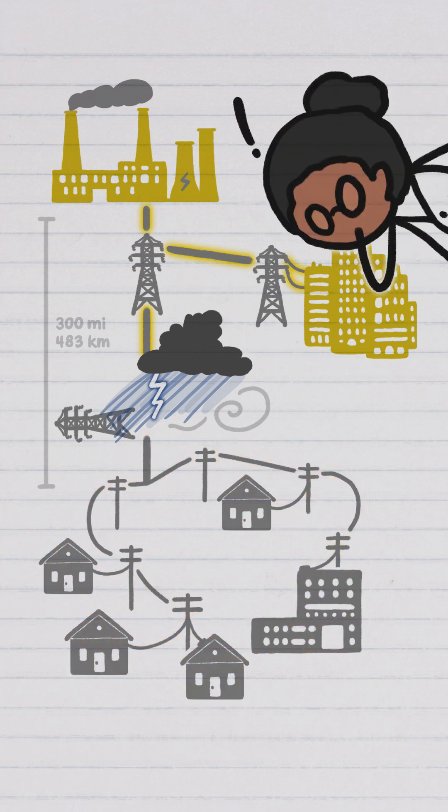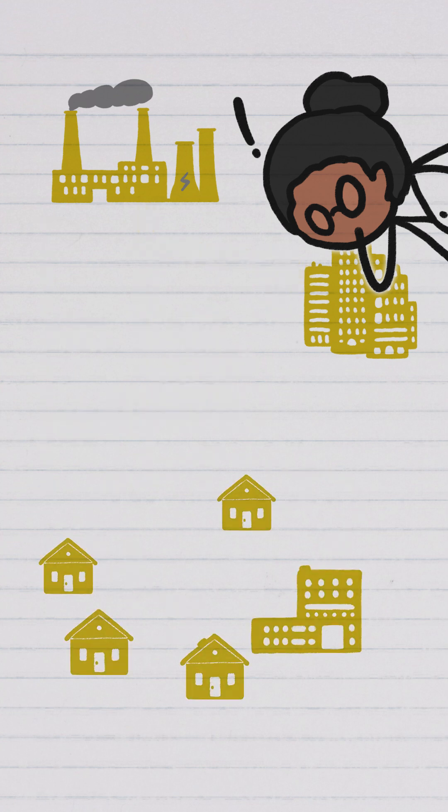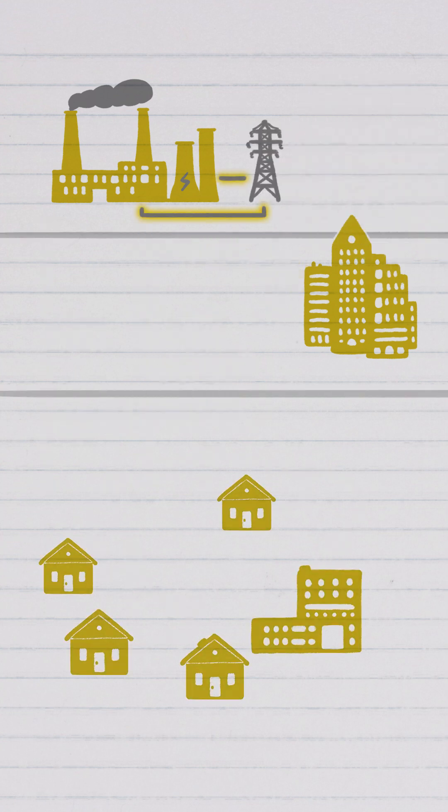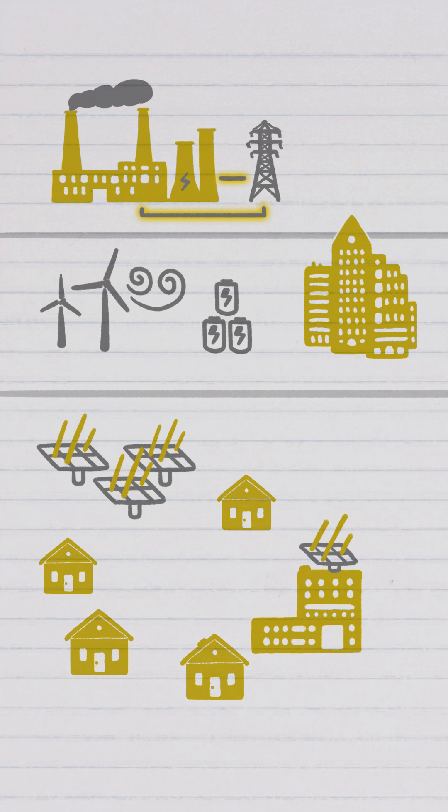Some scientists believe that the best way to make our power grids more resilient is to decentralize them. Smaller, independent grids supported by distributed power sources like local solar and wind farms, combined with storage methods like home batteries would be way more resilient.